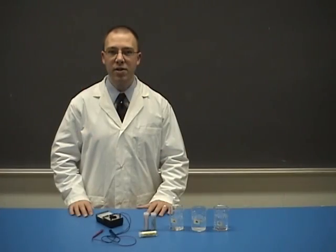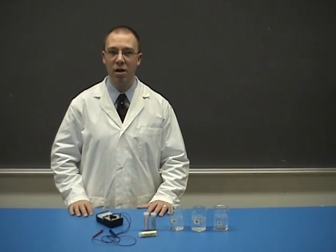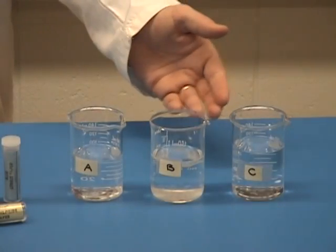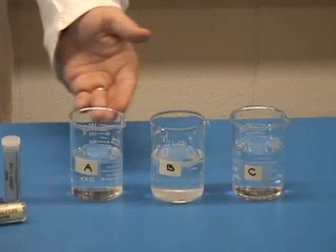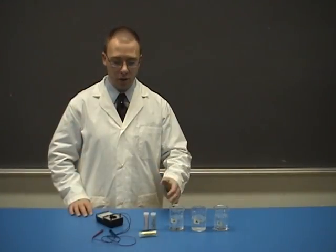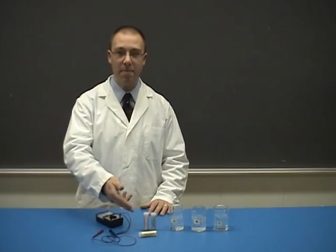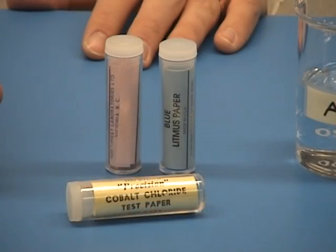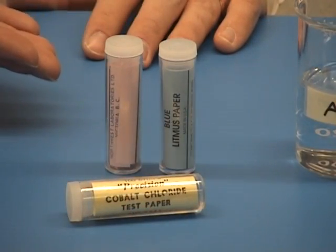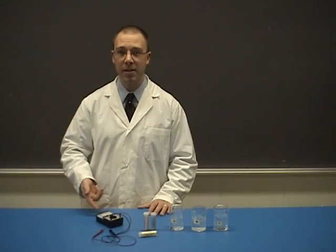The materials that you'll need for this lab are three liquid samples containing distilled water, an acid, and a base, cobalt chloride paper, red and blue litmus paper, and a multimeter.